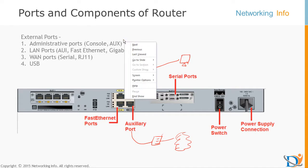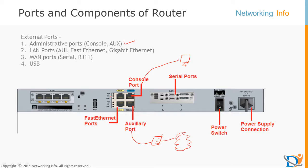LAN ports are generally used to send traffic and you can also access the device using a LAN port. It's not always necessary to access via console. First time you configure the device, assign an IP, and give permission to access from LAN — then you can access the router from anywhere in your network. Common LAN port speeds include Ethernet at 10 Mbps, Fast Ethernet at 100 Mbps, Gigabit at 1 Gbps, and 10 Gbps.